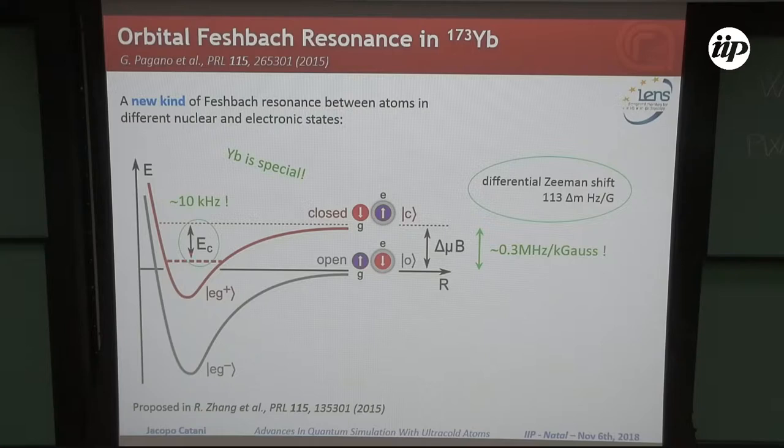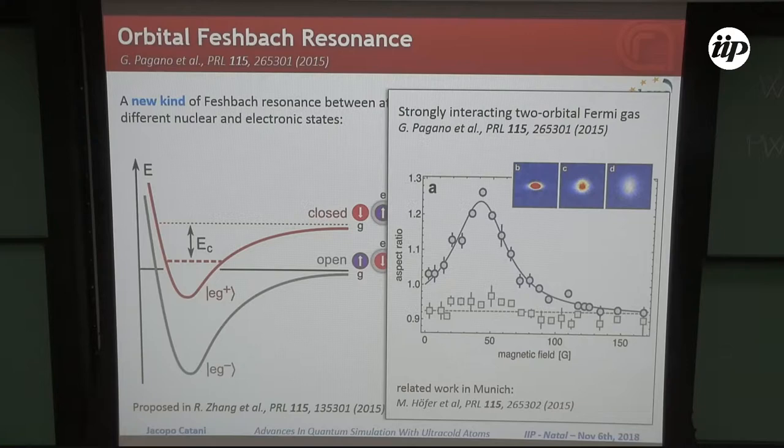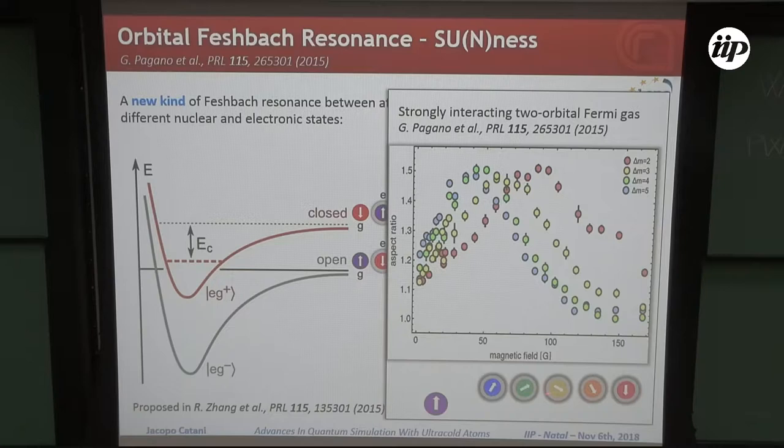This is exactly what we measured some years ago. You see here that around very low fields, convenient fields of 40-50 Gauss, we were able to drive the system in a strongly interacting regime. Interestingly, if we perform the same experiment for different spin mixtures, then the position of the center of the resonance is just shifting.